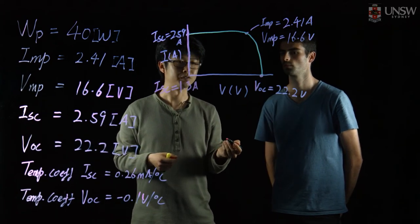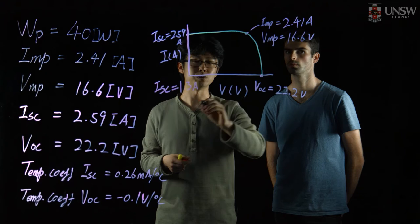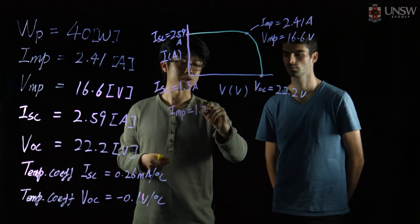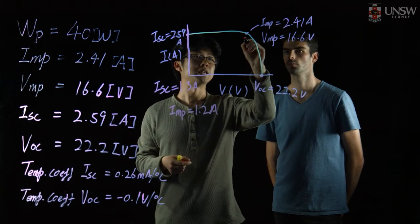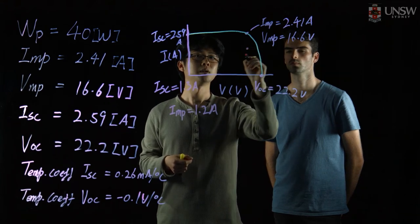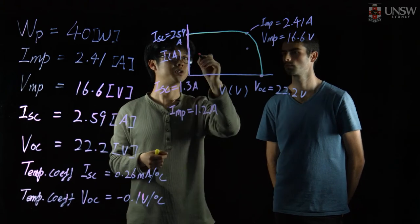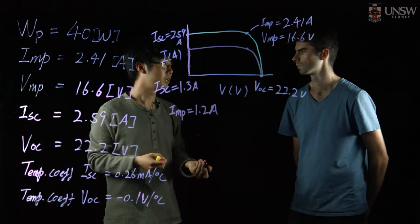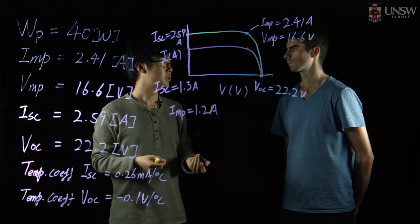At the maximum power point of this new curve, the current at the maximum power point also reduces by half, giving a new current at the maximum power point of 1.2 amps. The voltage remains the same at 16.6 volts. Joining the curve together gives the IV curve when the solar irradiance is reduced from standard test conditions to 500 watts per meter squared.